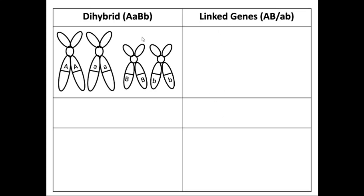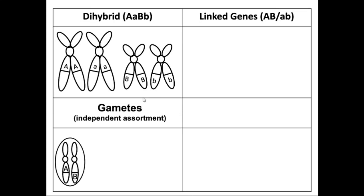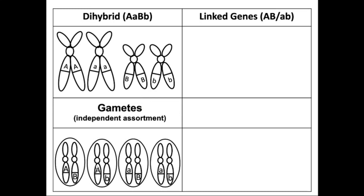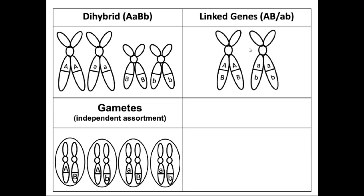Looking at this table comparing di-hybrid inheritance and linked genes: in a di-hybrid heterozygote, after meiosis, four types of gametes are produced — AB, Ab, aB, and ab — due to independent assortment.